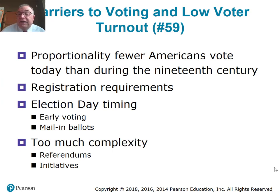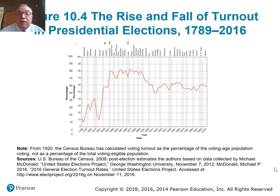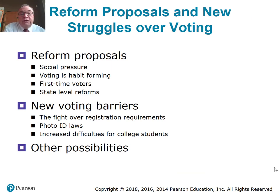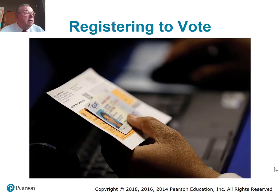The factor most connected to voter turnout is age, and the one least connected would be gender. Proportionally fewer Americans vote today than during the 19th century. A lot of that has to do with registration requirements, election day timing, and the complexity of the ballot. Turnout for presidential elections peaked in the 1800s and has now stabilized somewhere between 50 and 60%. To help more people vote, one reform is the Motor Voter Registration Law of 1993, which lets you register to vote when you go to do a government function like getting your driver's license.